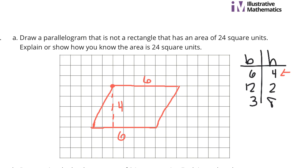Now, explain or show how you know. What if I take this triangle out here and move it over here? Then I would have this rectangle that is 6 by 4. The area of a rectangle is length times width — so there it is.